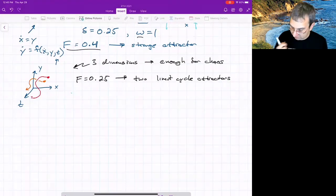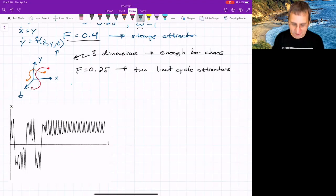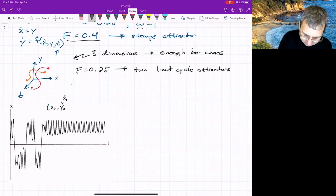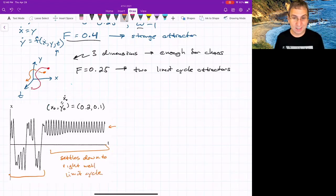Let me show. This is a time series of X as a function of time. It's starting out at X naught and then Y naught, which is just the initial velocity. This is at 0.201. And you'll notice there's this region here before it settles down to the right well, right positive X. So this settles down to right well limit cycle after transient chaos.